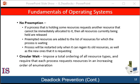Alternatively, if a process requests some resources, we first check whether they are available. If they are, we allocate them. If they are not, we check whether they are allocated to some other process that is waiting for additional resources. If so, we preempt the desired resources from the waiting process and allocate them to the requesting process. If the resources are neither available nor held by a waiting process, the requesting process has to wait. While it is waiting, some of its resources may be preempted, but only if another process requests them. A process can be restarted only when it is allocated the new resources it is requesting and recovers any resources that were preempted while it was waiting. This protocol is often applied to resources whose state can be easily saved and restored later, such as CPU registers and database transactions. It cannot generally be applied to resources such as mutex locks or semaphores, precisely the type of resources where deadlocks most commonly occur.